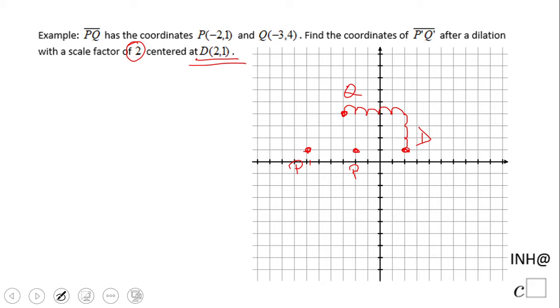From point D to point Q, we have 1, 2, 3... 1, 2, 3, 4, 5. So we're going to do the same thing one more time: move up 1, 2, 3, then right 1, 2, 3, 4, 5. This should be point Q prime.